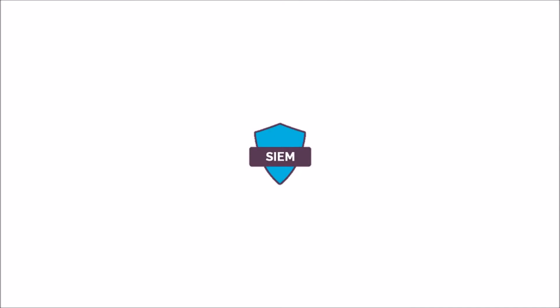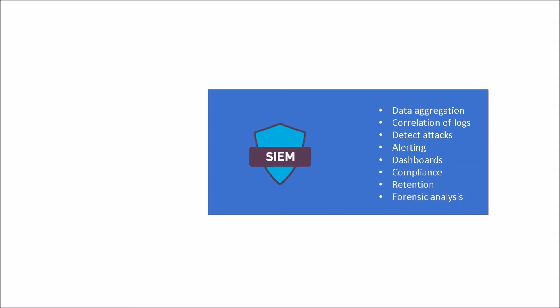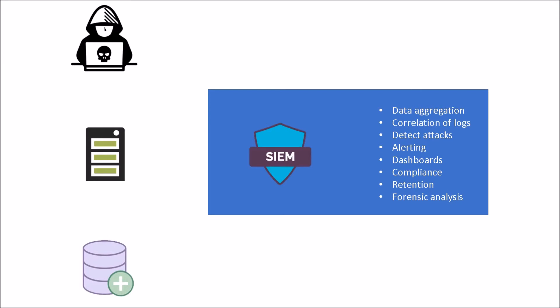One example you can see in this diagram from an SIEM platform is that it's able, from a use case perspective, to detect what an attacker is trying to do against a server. You may have a web application server running on Apache or different kinds of web systems, connected to databases housing critical personal data, financial information, or enterprise information. What the hacker is trying to do could be a SQL injection or cross-site scripting, and all this log information is thrown into the SIEM platform.